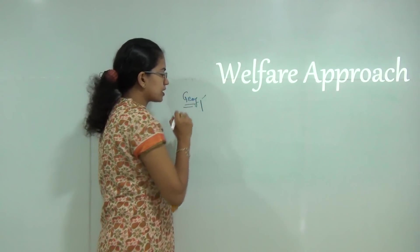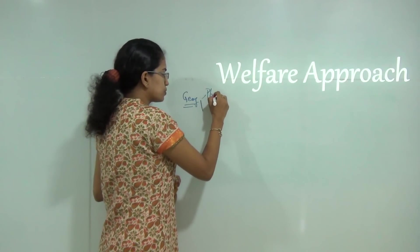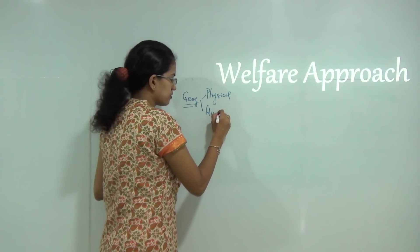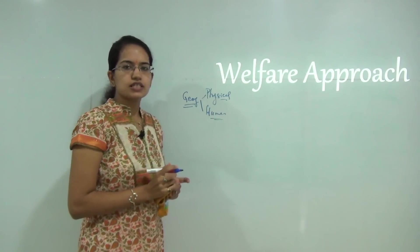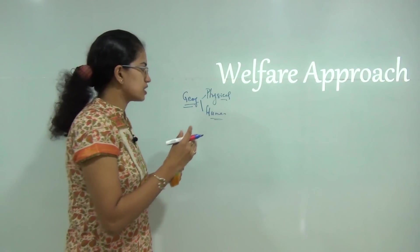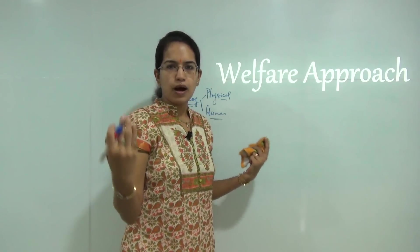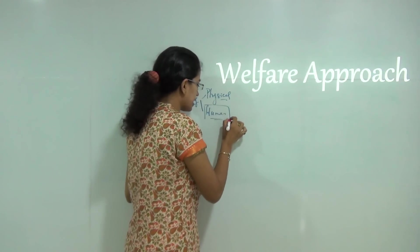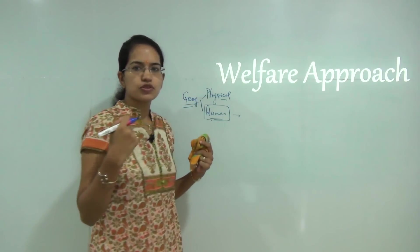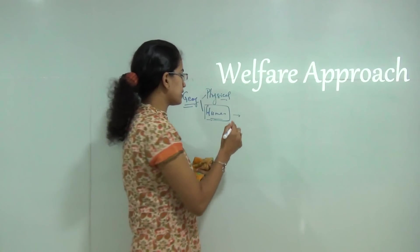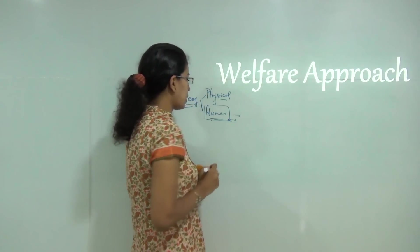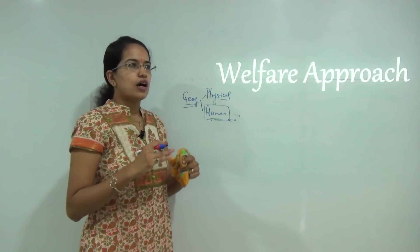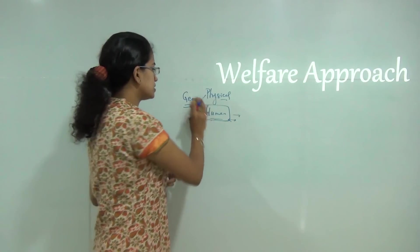In geography we broadly classify the field of study into two divisions — physical geography and human geography. As the word suggests, physical geography deals with the structure of the earth, the landforms, the mountains, the rivers, the oceans, while on the other hand human geography deals with the interaction of human beings with the environment. There has been a huge set of debate going on since years about how to understand this interaction.